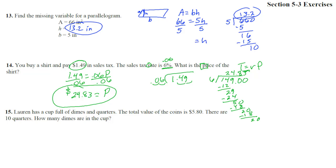Number 15. Lauren has a cup full of dimes and quarters. So we're going to have a D, and we're going to have a Q. The total value of the coins is 5.80, and there are 10 quarters. So Q is 10. And then how many dimes? That's going to be the variable. So let's write that formula. In general, with dimes and quarters, it's going to be 0.1D. That's 10 cents for every dime, plus 25 cents for every quarter. And then we have that is V. So 5.80 equals 0.1 times D. We don't know D, so let's leave it like that. And then the quarters is 10, plus 0.25 times 10.